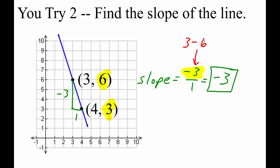3 minus 6 equals negative 3. For this reason, the vertical rise is also called the change in y. 4 minus 3 equals 1, so the horizontal run is also called the change in x.